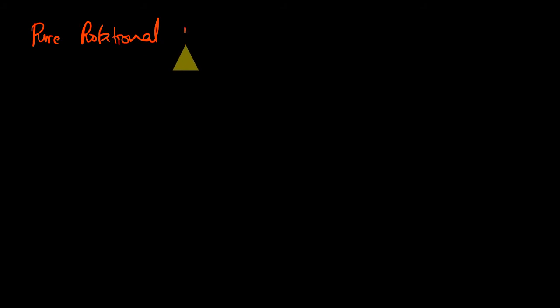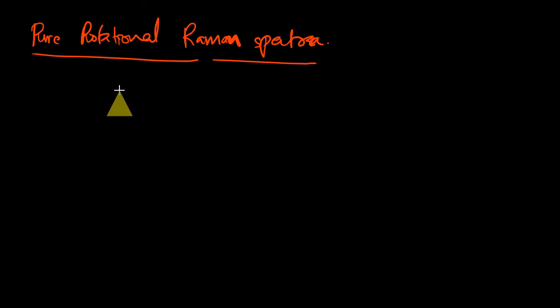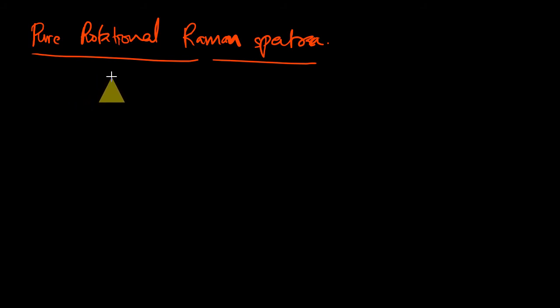In this lecture, I am going to talk about the pure rotational Raman spectra. In the last class we were already going through the classical theory of Raman spectroscopy, where we saw three frequency components corresponding to the Stokes lines, Rayleigh scattering, and anti-Stokes lines. The Raman spectrum arises due to the change in polarizability during molecular vibration or rotation.